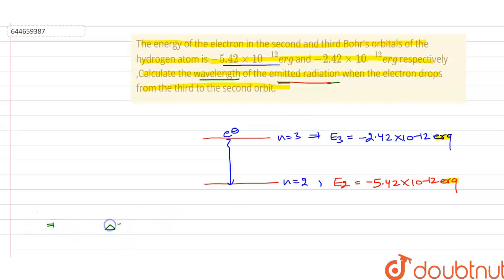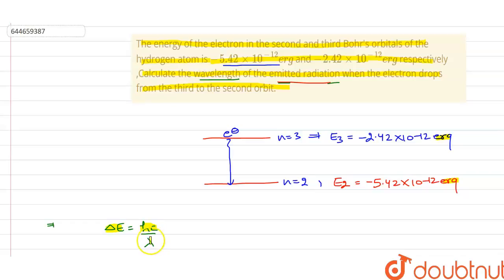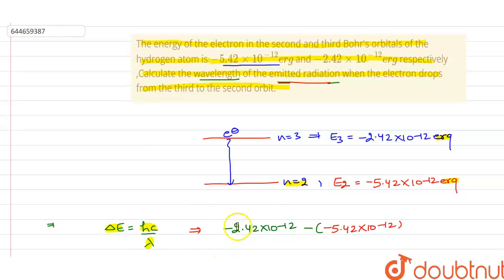To solve this question, we will use the formula: ΔE = hc/λ, where ΔE is the energy difference between the third and second orbital, h is Planck's constant, c is the speed of light in vacuum, and λ is the wavelength of the emitted radiation that we need to find.